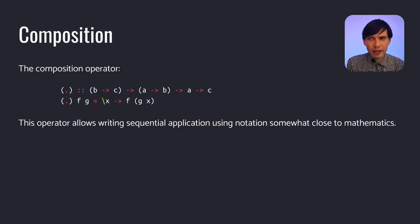The next example is related to composition. Here we have the dot operator. And this operator allows the user to write sequential application of functions using this quite convenient notation which is close to mathematics, where we have composition of set theoretic functions or composition of morphisms in category theory or something like that. And this dot operator plays the same role as the circle from mathematics and category theory.